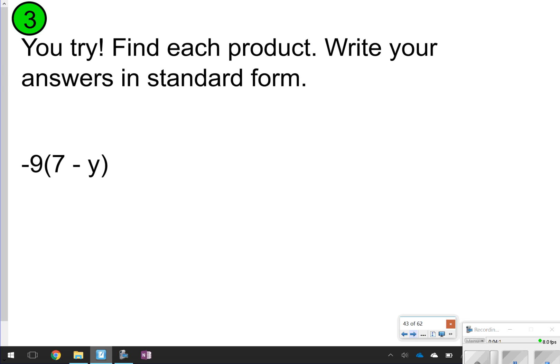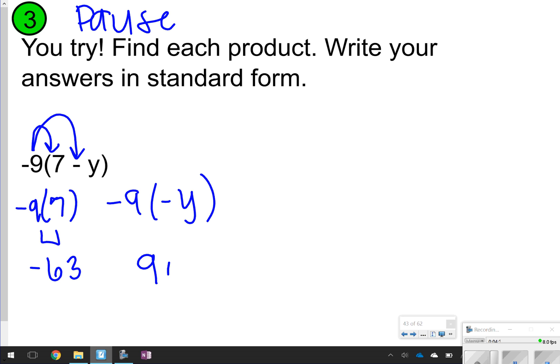Let's try another one. Again, find the product by distributing. Write your answer in simplest form or standard form. Go ahead and pause the video now and click play when you're ready to check. Here we go. Negative 9 times 7 and negative 9 times negative Y. Negative 9 times 7 is negative 63. And negative 9 times negative Y is positive 9Y. Put it all together. Variable coming first: 9Y minus 63.